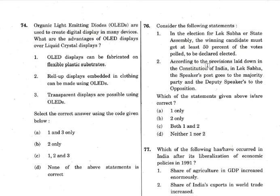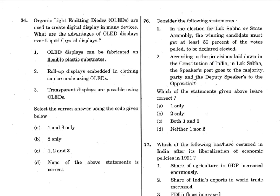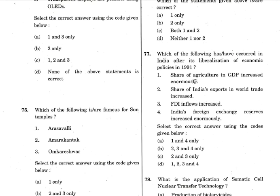According to the provisions laid down in the Constitution of India, in Lok Sabha the Speaker post goes to the Majority Party and the Deputy Speaker goes to the Opposition Party. This actually happens in India, but it's not laid down in the Constitution — it's just by convention. So option two is also wrong. Both one and two are incorrect.